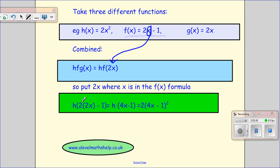So we have 2 times 2x minus 1. But we've still got that h to act on that. So we've got h acting on all of that, sorting that out a little bit. That's h acting on 4x minus 1.